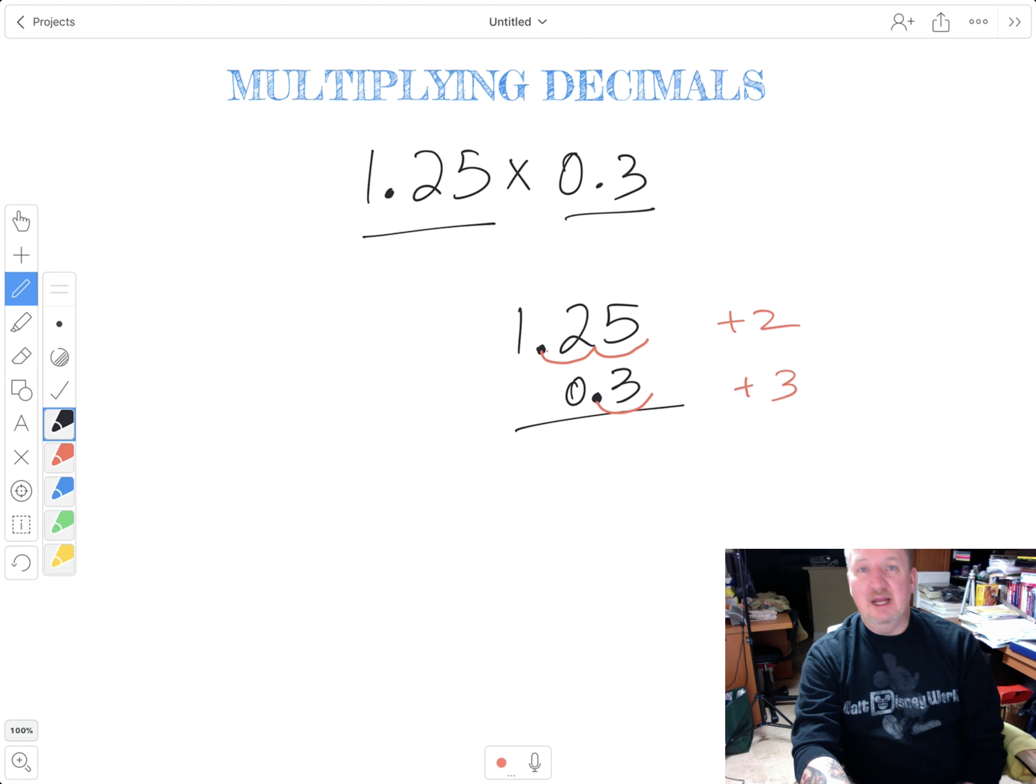So now, once I've done that, I can just multiply, just like a regular standard algorithm. 3 times 5 is 15, carry the 1. 3 times 2 is 6, plus 1 is 7. And then 3 times 1 is 3.